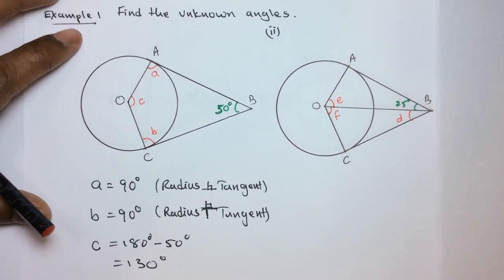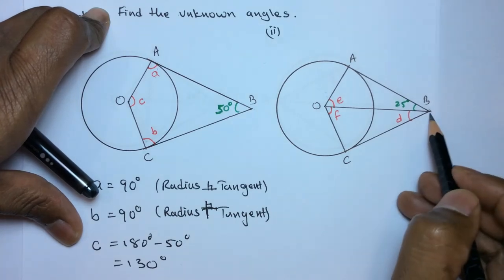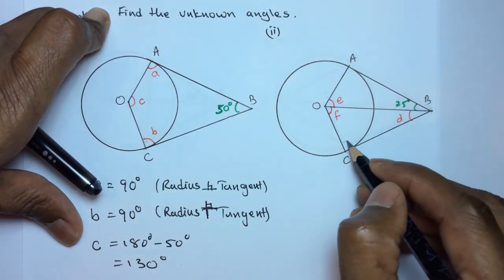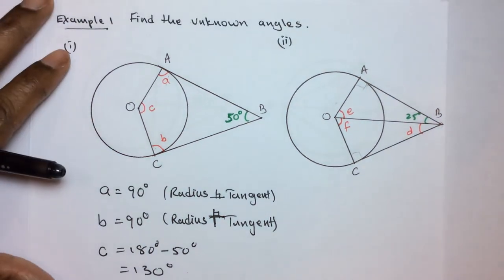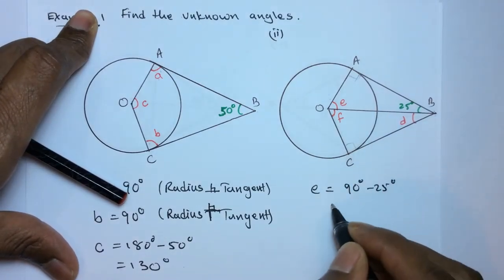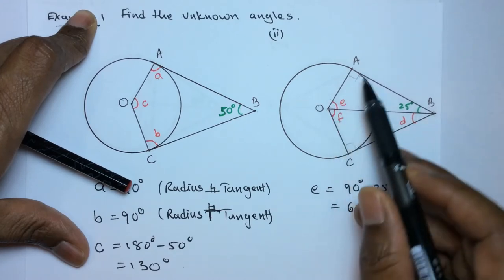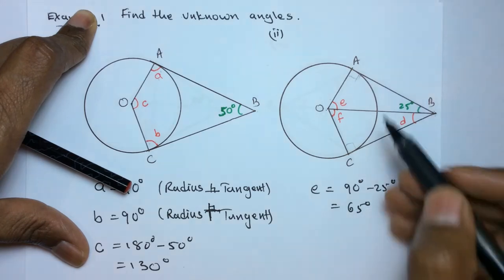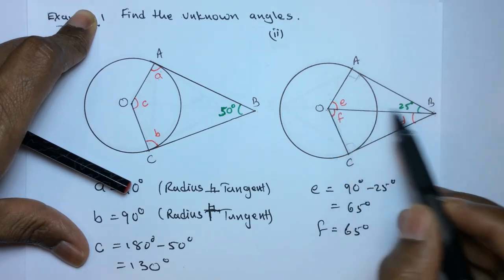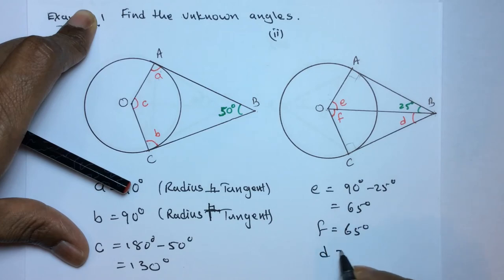Part 2. Here we have a circle, center O, with radii OA and OC, and external point B. So AB and CB are tangents, making those angles 90 degrees each. Angle E is equal to 90 degrees minus 25, which is 65 degrees. We know that OB bisects angle A or C. So angle F is equal to angle E, which is 65 degrees. Since OB also bisects the angle, D and 25 are equal. Therefore D is equal to 25 degrees.